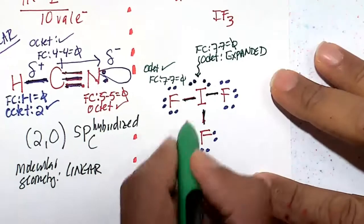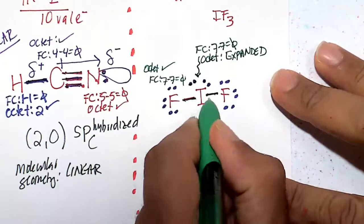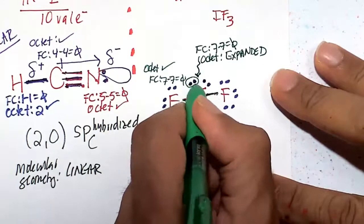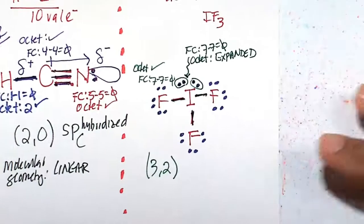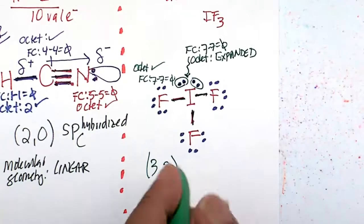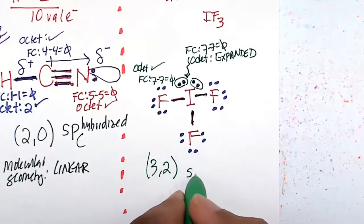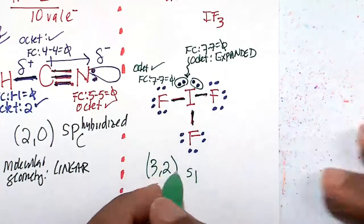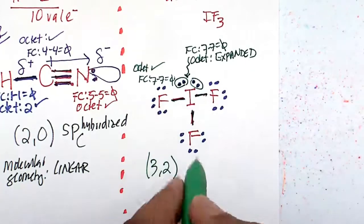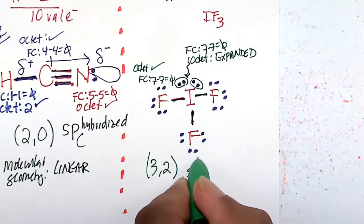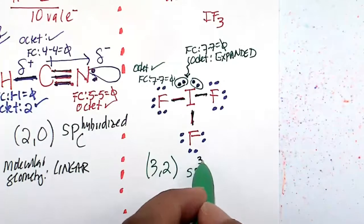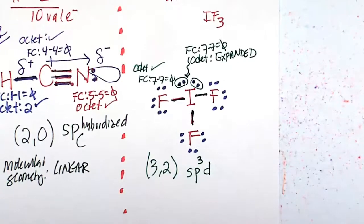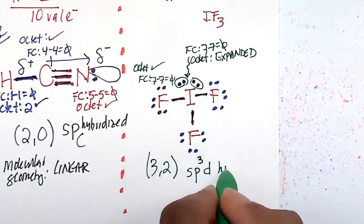So three bonds and two lone pairs. 3 plus 2 is 5, so I'm going to take 1 from S orbital. P has three slots, I'll use those three from P, so 1 plus 3 is 4, and then I'll take a slot from D. This is an SP³D hybridized iodine atom.